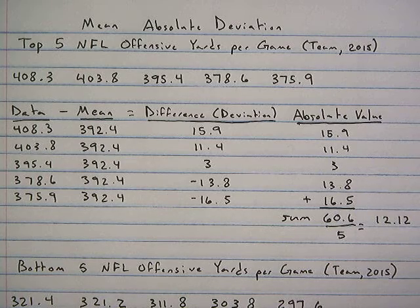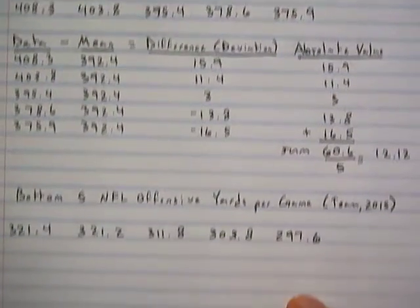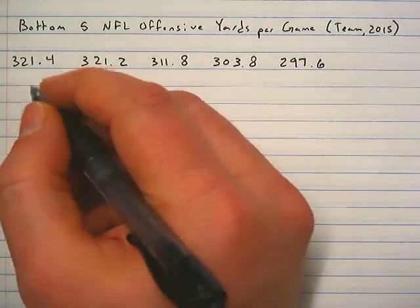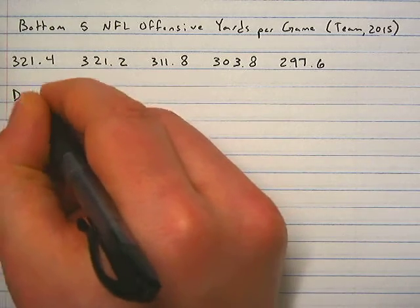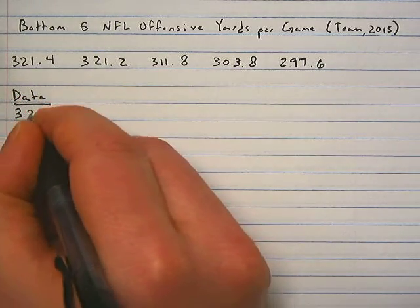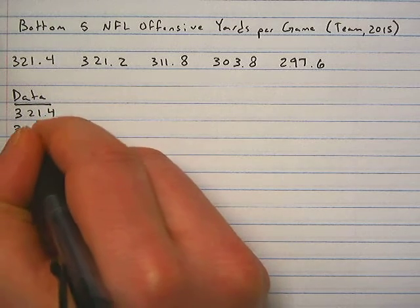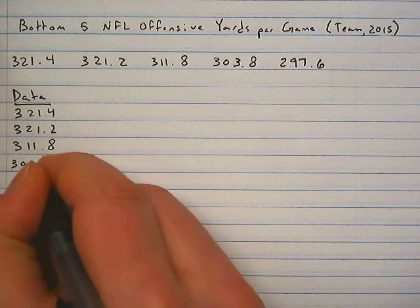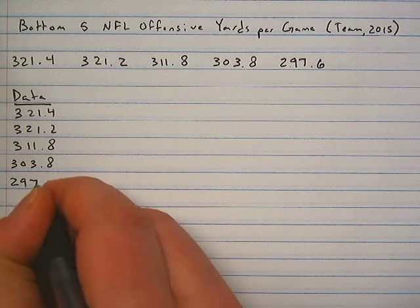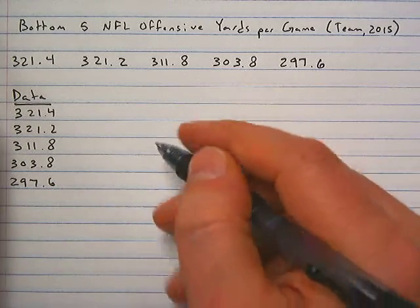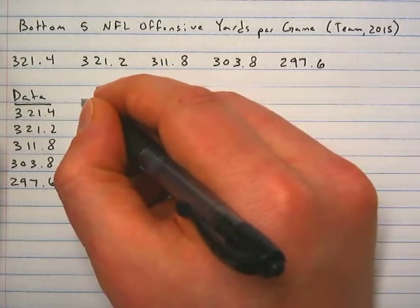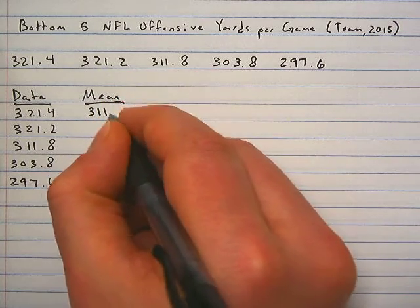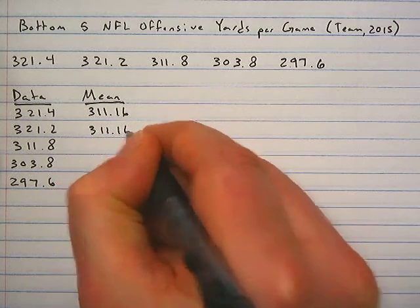This data doesn't tell us much by itself, but we'll now do this for the bottom five NFL teams and compare. Here are the numbers for the bottom five. The first step is our data column, and the next step is to find the mean and create a column with it, which is 311.16.